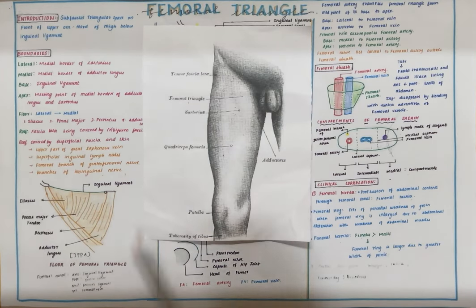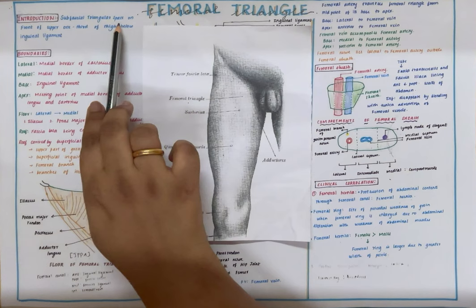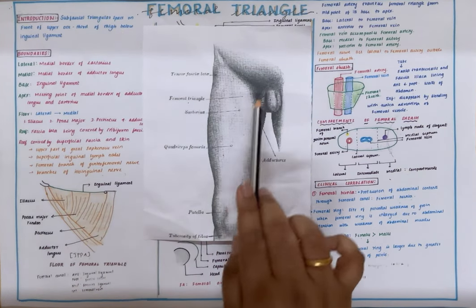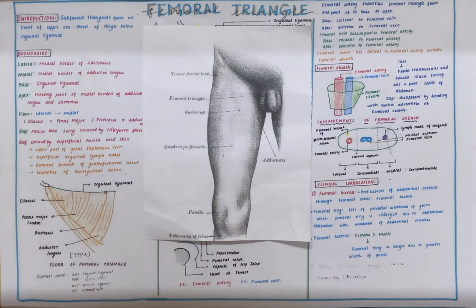Good morning everyone. Today we are going to be discussing the femoral triangle. The femoral triangle is a subfascial triangular space which is located in the front of thigh in the upper one-third region below the inguinal ligament.